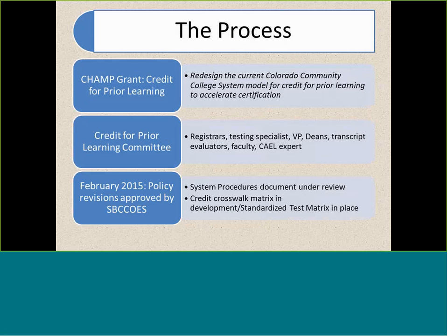The process started with the CHAMP grant — Colorado Health Advanced Manufacturing Programs. It's a TAACCCT grant, a Department of Labor grant specifically focused on getting people through school quickly and into jobs. This is the third one we've had in the state, and we work on acceleration activities. On round three, we started with this idea of accelerating through credit for prior learning. What we said we would do, very simply, was redesign the current Colorado Community College system model for credit for prior learning to accelerate certification — and we've actually done quite a lot more than that.